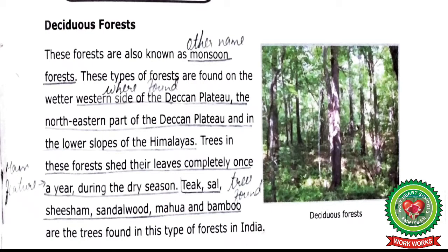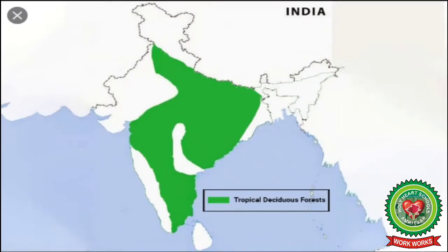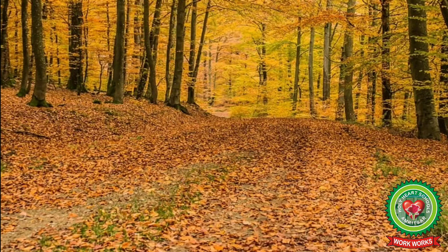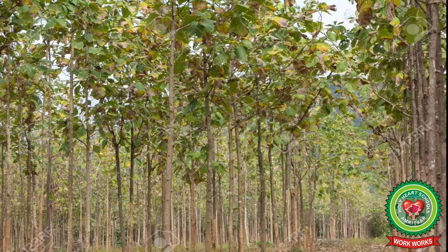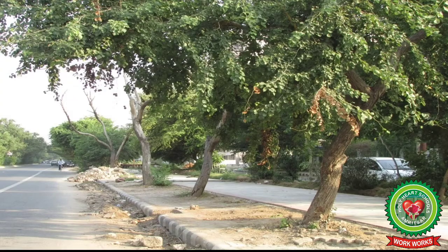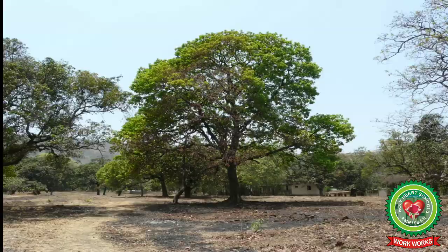The other name for deciduous forests is monsoon forests. They are found on the western side of the Deccan Plateau, the northeastern part of the Deccan Plateau, and in the lower slopes of the Himalayas. The main feature of these forests is that trees shed their leaves in the dry season. Teak, Sal, Shisham, Sandalwood, Mahua, and Bamboo are the trees found here.